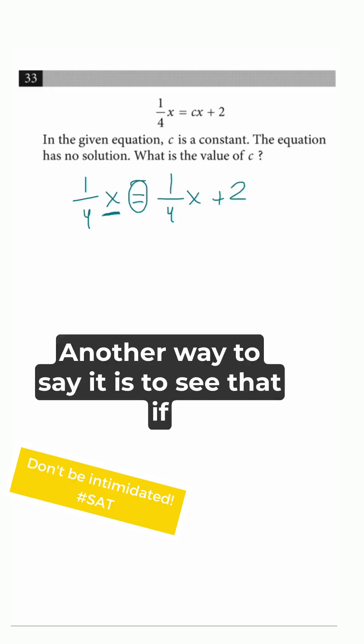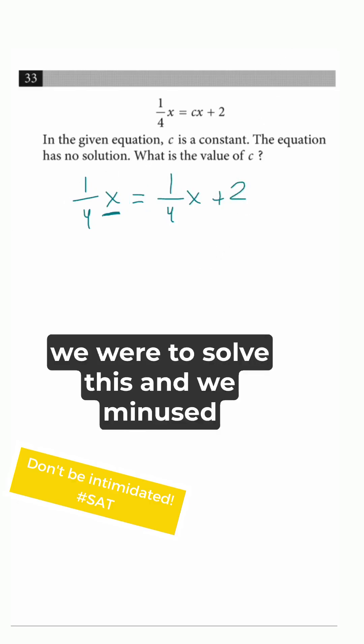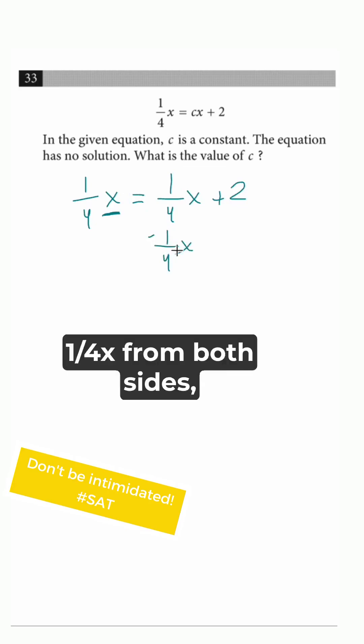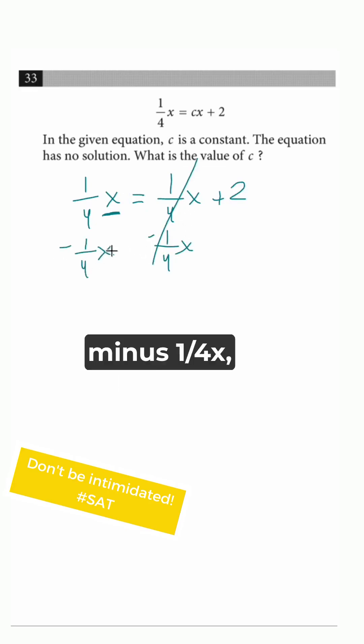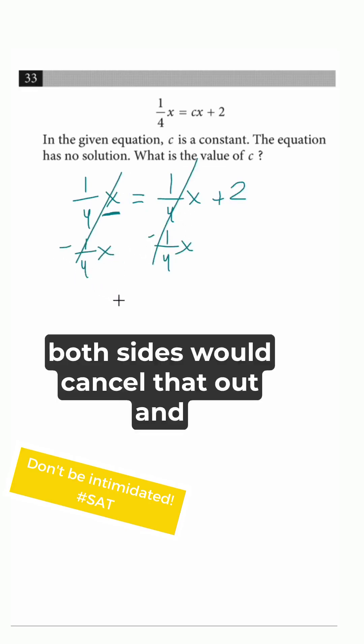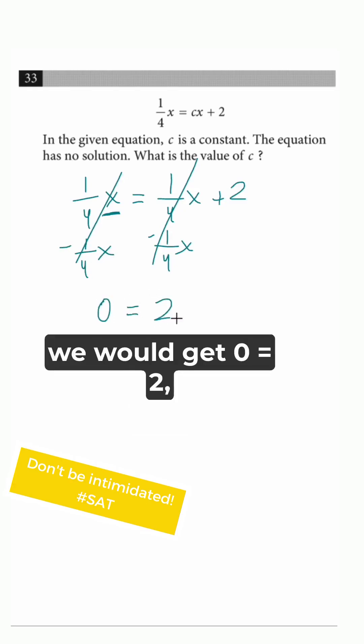Another way to say it is if we were to solve this and we minus 1 fourth x from both sides, both sides would cancel that out and we would get 0 equals 2.